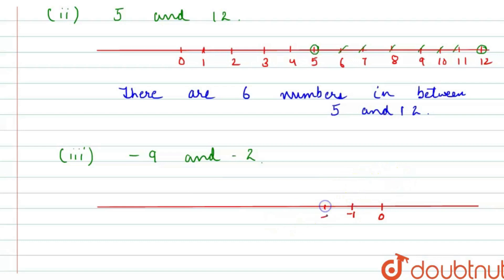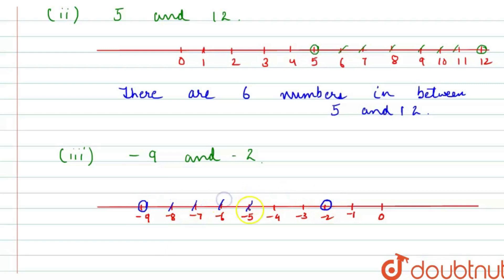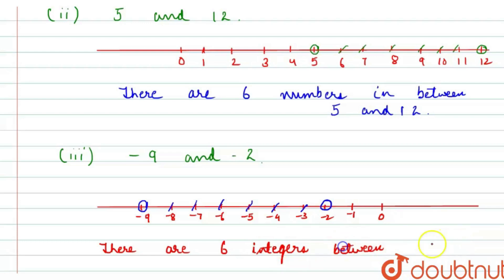So it's minus 1, minus 2, minus 3, minus 4, minus 5, minus 6, minus 7, minus 8 and minus 9. We have to find integers between minus 9 and minus 2. Let's count: 1, 2, 3, 4, 5, 6. Again there are 6 integers between minus 9 and minus 2.